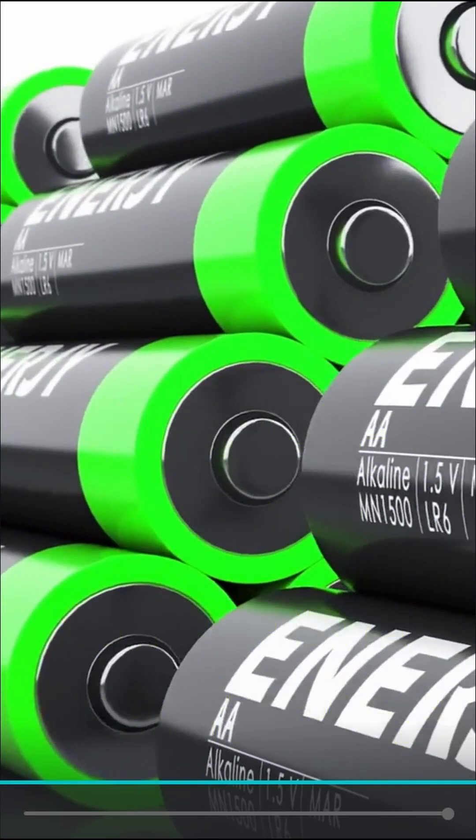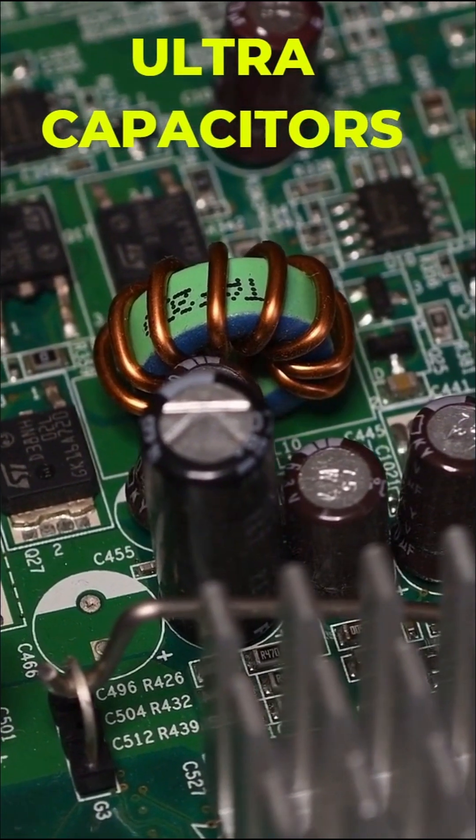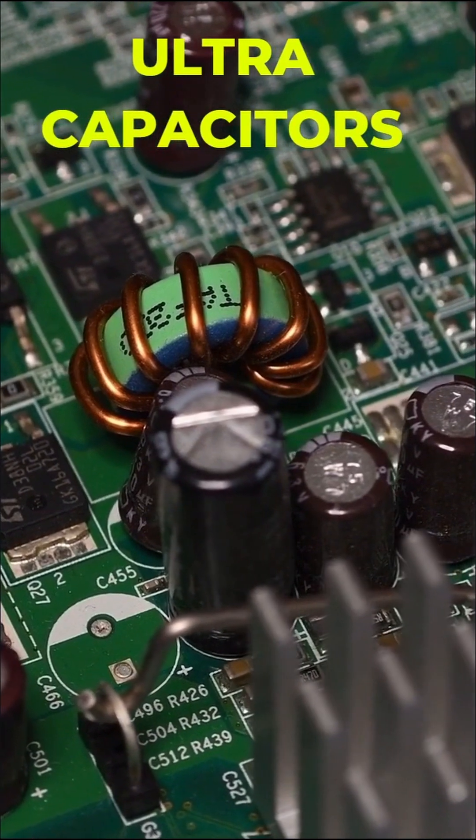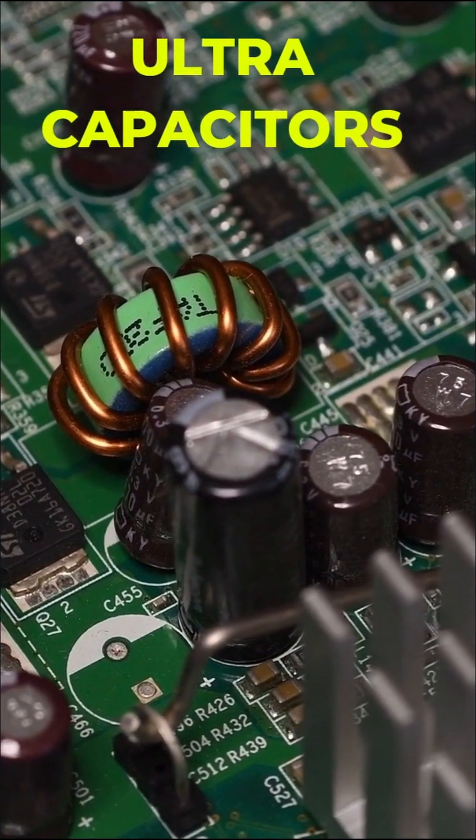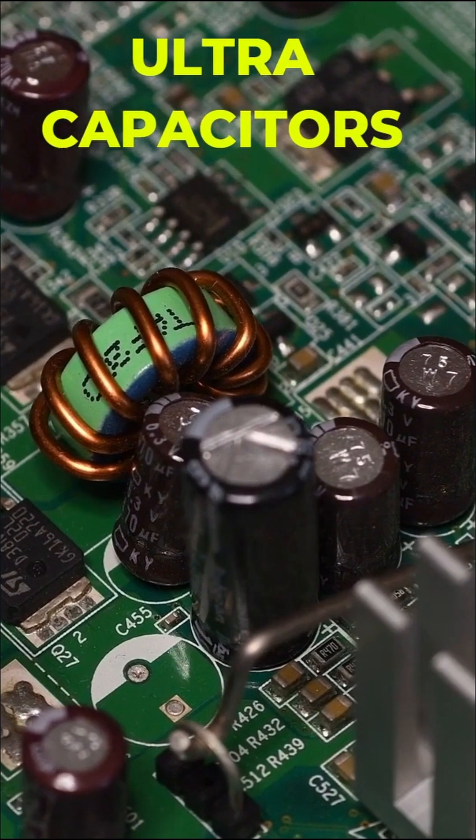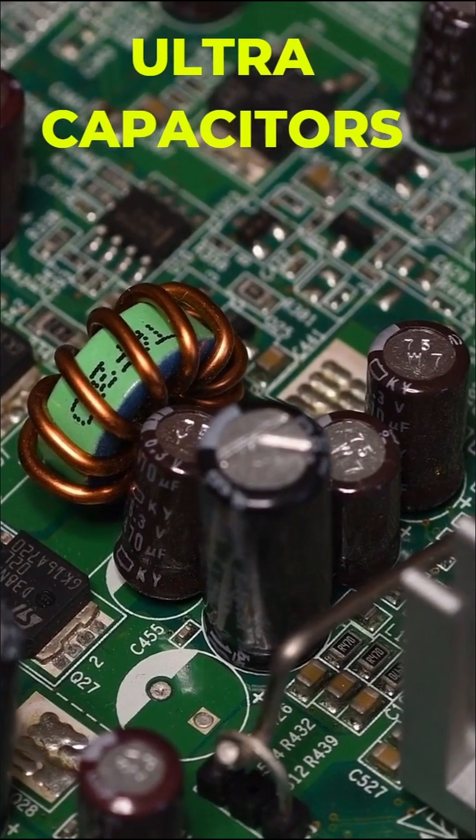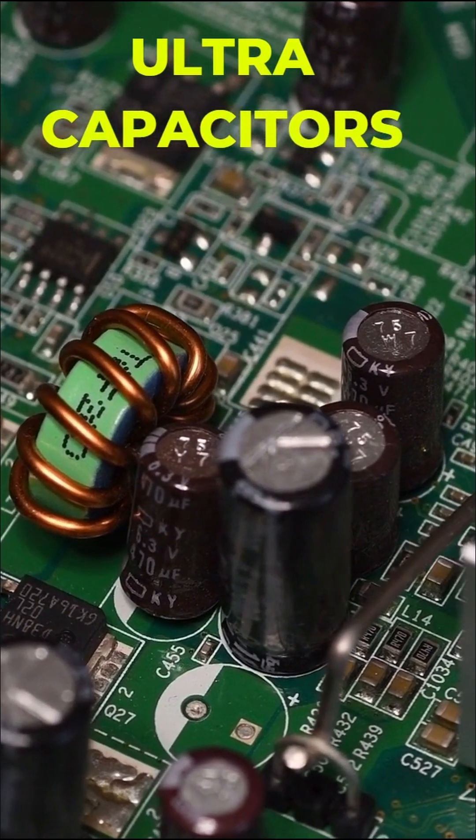And next one is ultra capacitors. These ultra capacitors or super capacitors are used in some electric vehicles to provide a quick burst of power for acceleration and regenerative braking. They can charge and discharge rapidly.